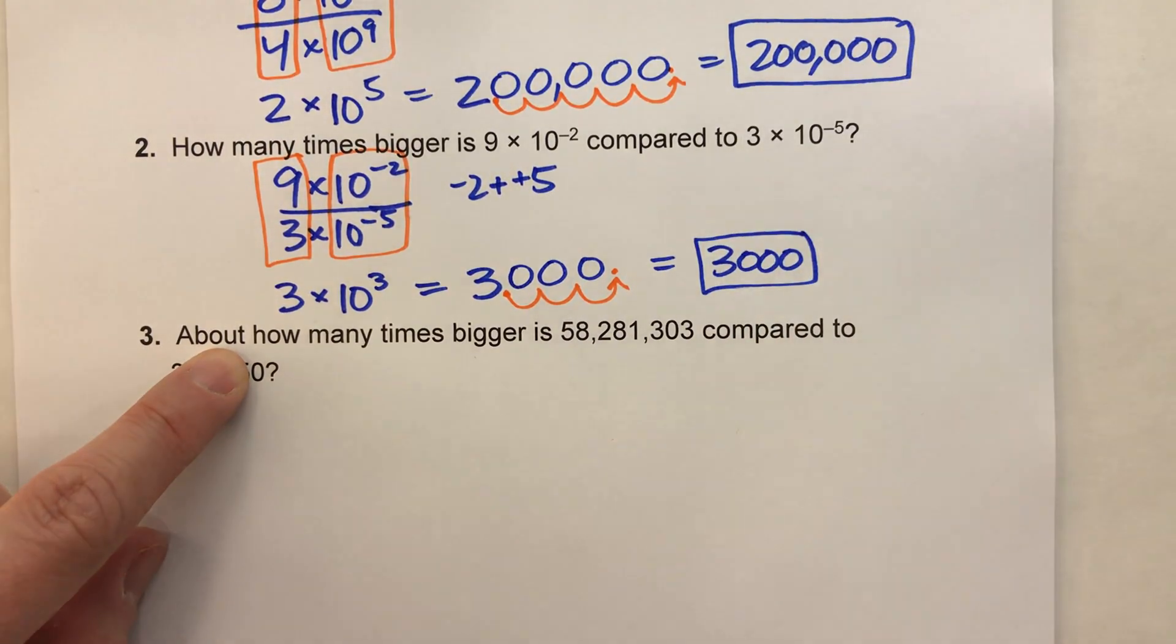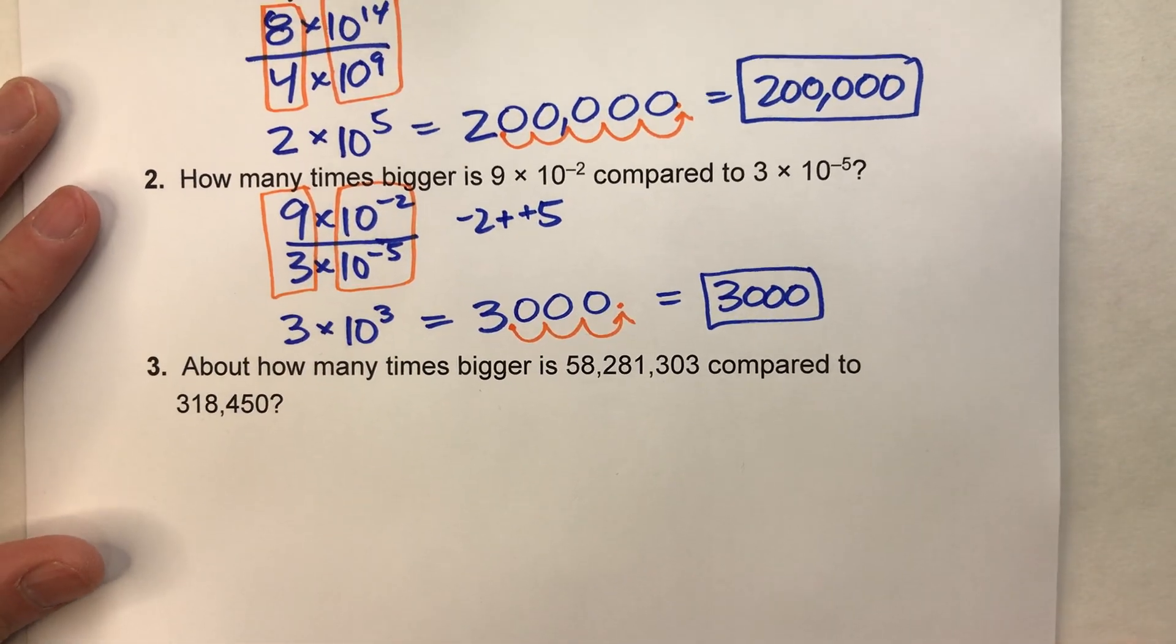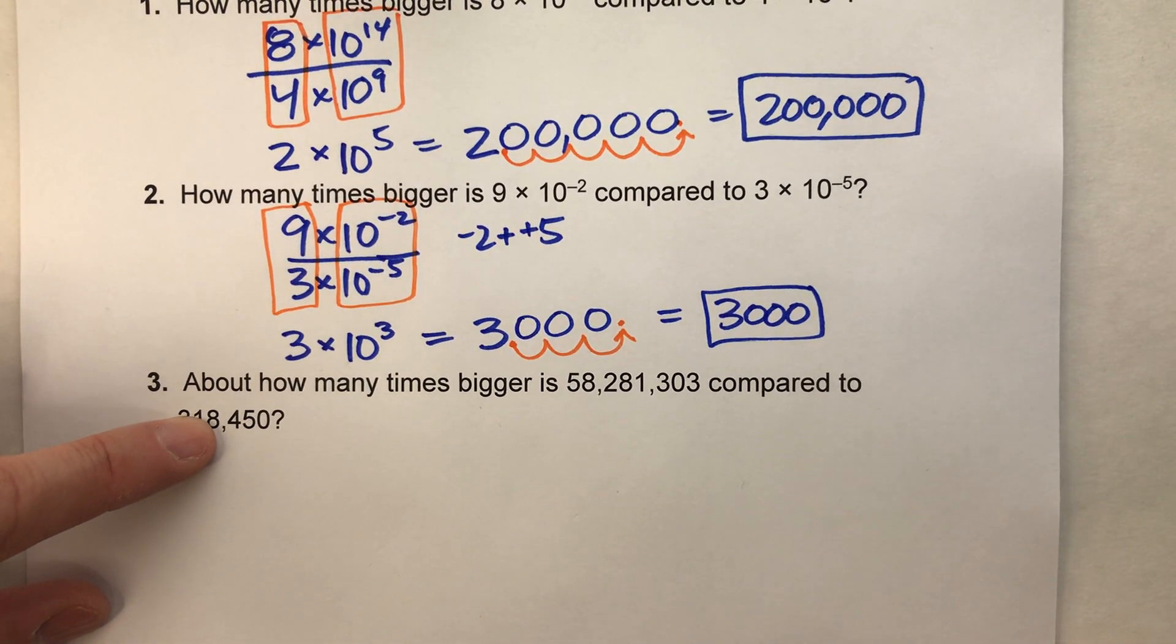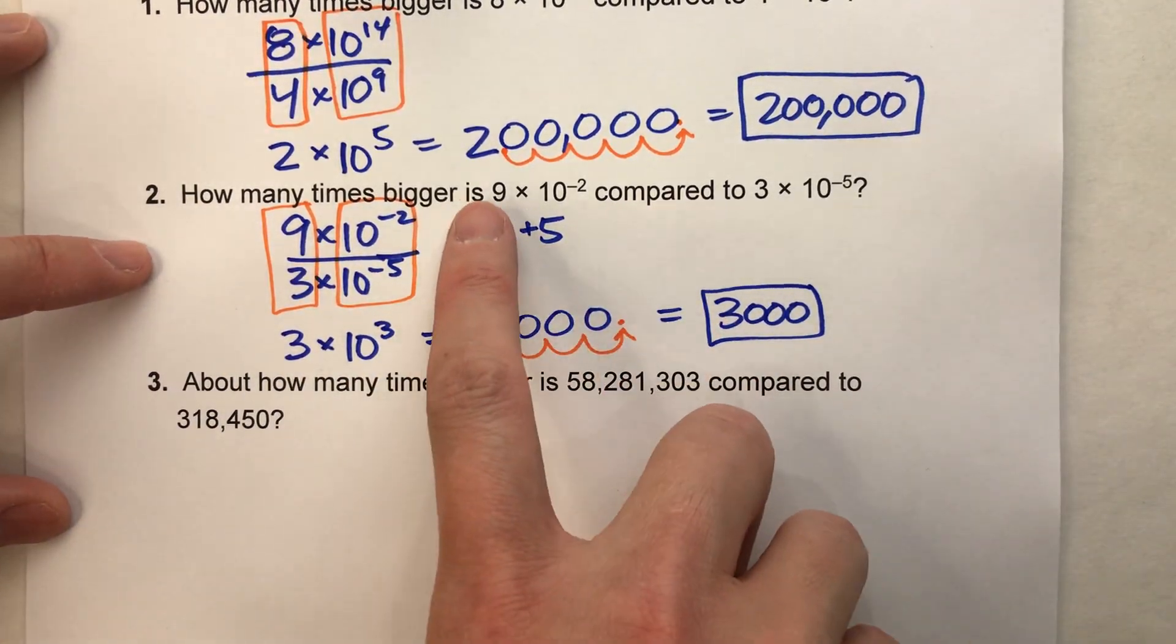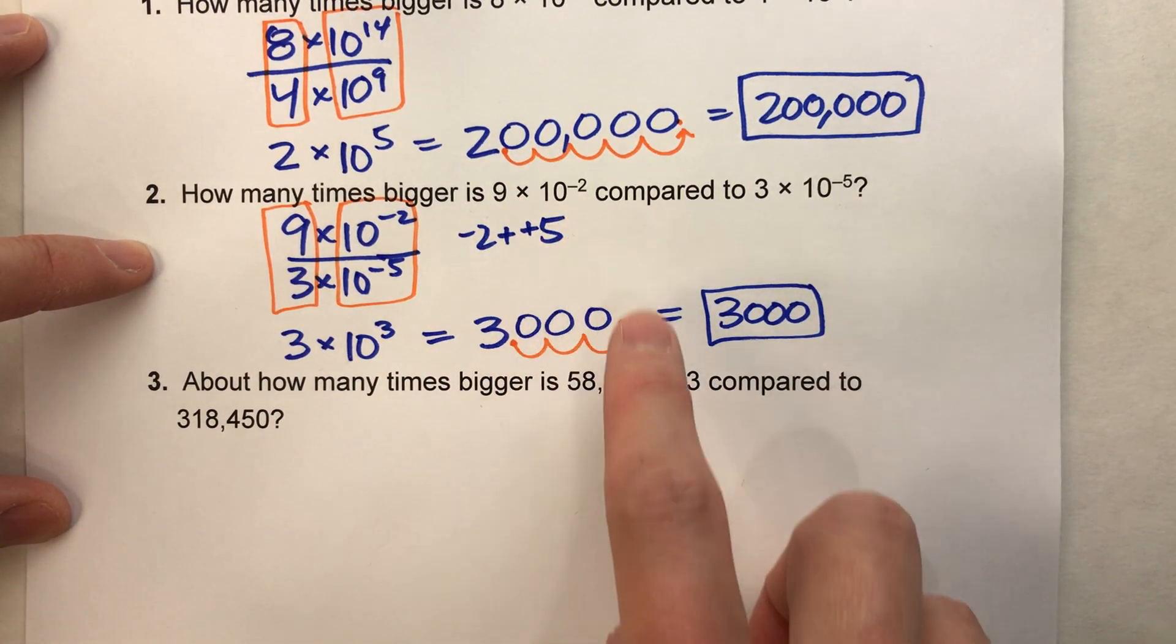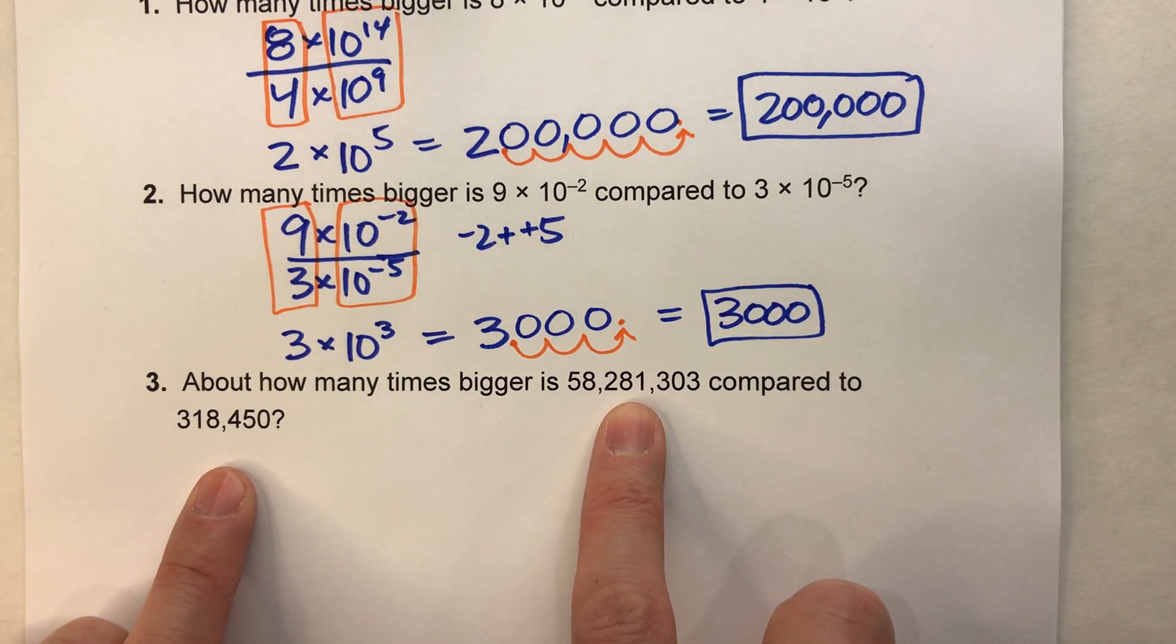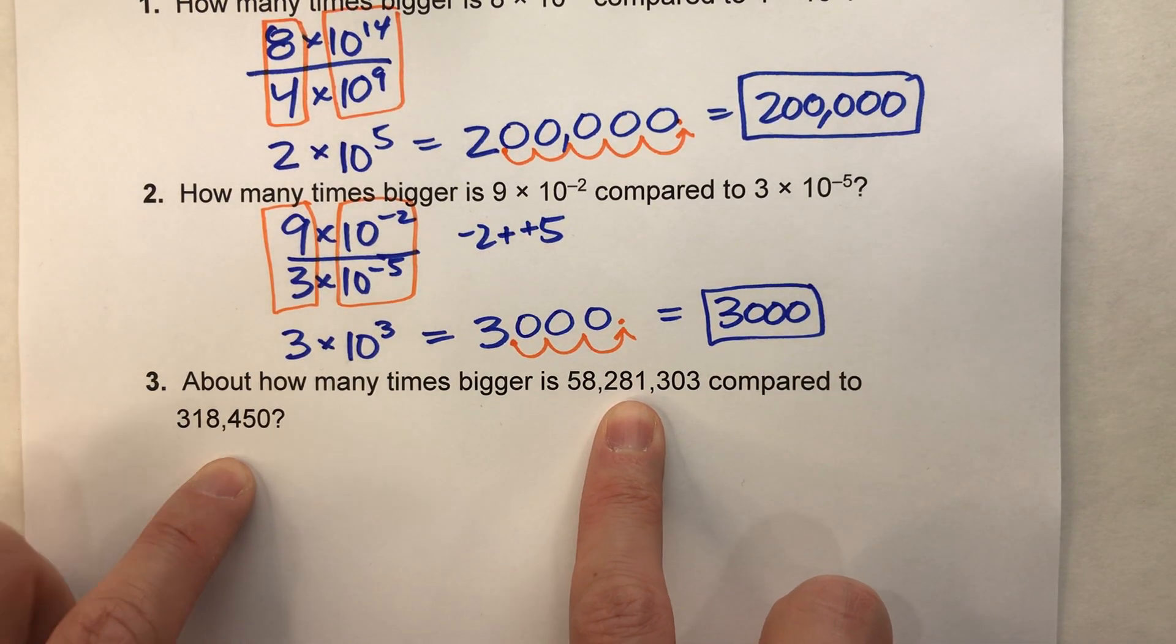Because it says about, we can estimate this and get pretty darn close. And here's how we're going to do it. Remember how in the previous problems, we had a single digit times the power of 10? Let's make these two numbers single digits times the power of 10.